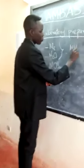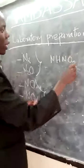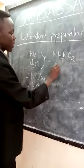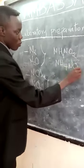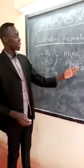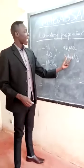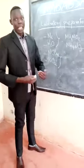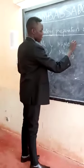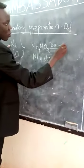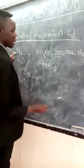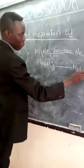We have a compound called ammonium nitrite, and then we have ammonium nitrate. The difference is the number of oxygen atoms — nitrite has 2 oxygen atoms, nitrate has 3 oxygen atoms. If you want to prepare nitrogen gas, you decompose ammonium nitrite and you get nitrogen gas. When you decompose ammonium nitrate, you will get nitrogen 1 oxide gas.